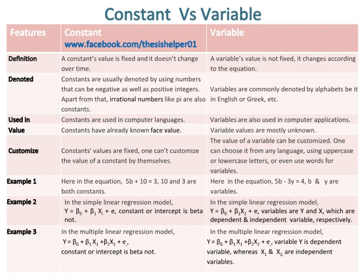In example 2, in the simple linear regression model, constant or intercept is beta not. Whereas in the simple linear regression model, variables are y and x1, which are dependent and independent variable, respectively.